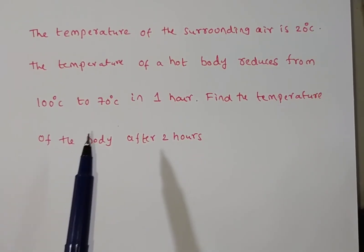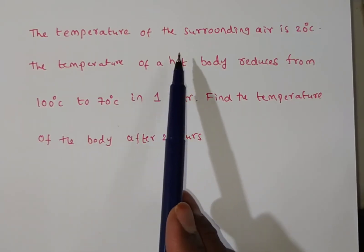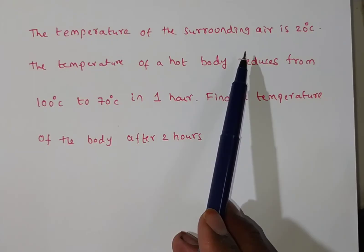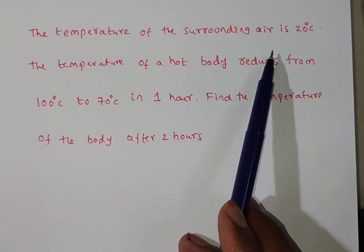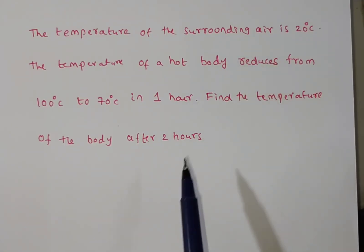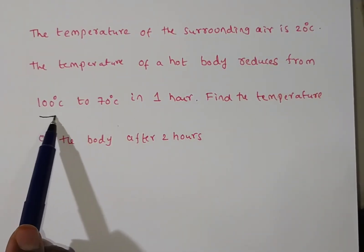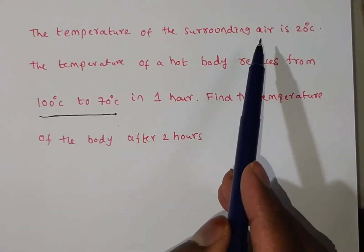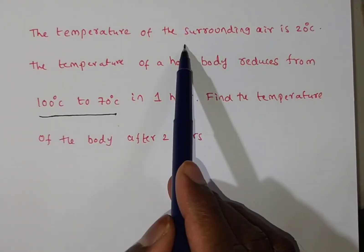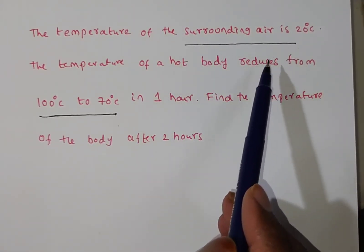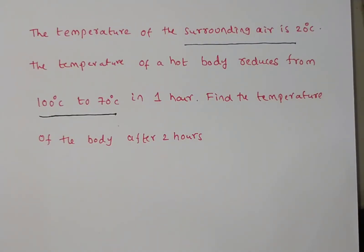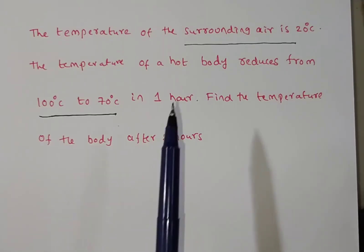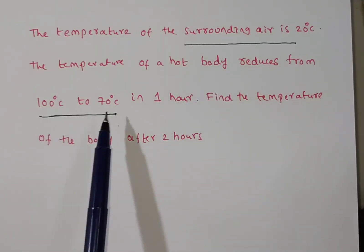By observation, due to the surrounding air temperature of 20 degree centigrade, the hot body reduces from 100 degree centigrade to 70 degree centigrade. There is a surrounding temperature, so this problem belongs to the application of differential equations — that is, Newton's law of cooling — because due to the surrounding media, the temperature is reducing.